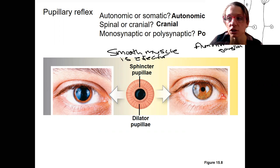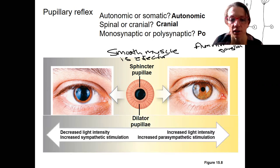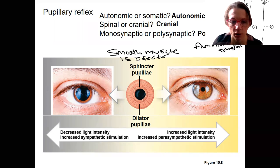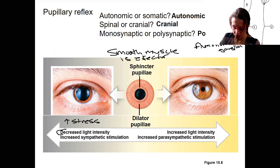So with decreased light intensity, you're going to have increased sympathetic activation, which is going to cause the pupils to dilate. This can also happen with increased stress, with the fight or flight response, but decreased light intensity is the main stimulus. It's dark. Your pupils need to get bigger to let in enough light to be able to see.